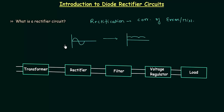In most electronic applications, DC voltage — that is, a constant voltage supply — is required. In our homes we have AC power supply because it is convenient to transmit AC power over long distances. So we have AC power at home, but many applications use DC power, so we have to rectify that AC power to DC. For this purpose we use a rectifier circuit.